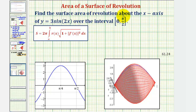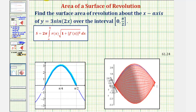We want to find the surface area of revolution about the x-axis for the function y equals three sine two x over the closed interval from zero to pi over two. Looking at the graph on the lower left, here's a graph of our function y equals three sine two x over the closed interval from zero to pi over two. If we rotate this about the x-axis, it would give us this surface, and our goal is to find the surface area of this surface.